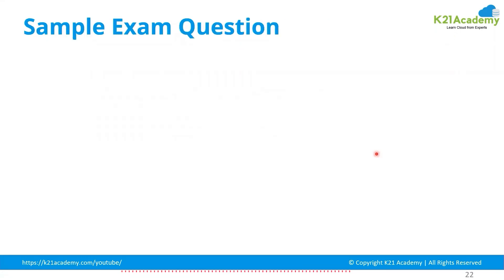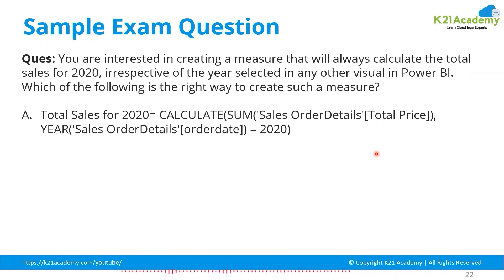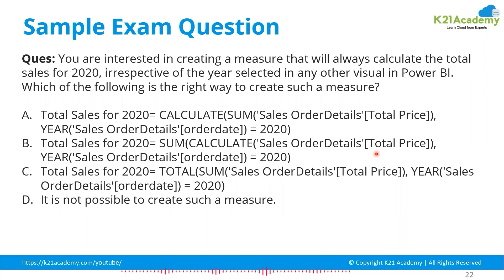A sample modeling question: 'You want to create a measure that will always calculate total sales for 2020, irrespective of the year selected in any other visual in Power BI. Which option is correct?' The options present various DAX expressions. The correct answer is A: using CALCULATE with SUM of Sales Order Details Total Price filtered by YEAR equals 2020.